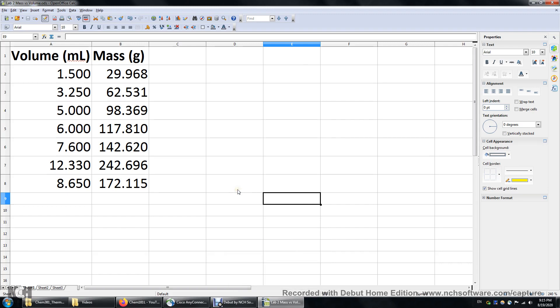In this video I will determine the density of an unknown metal using the volume and mass data in this OpenOffice spreadsheet.